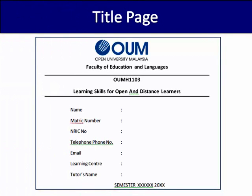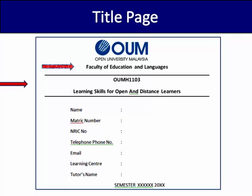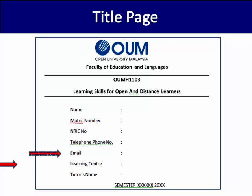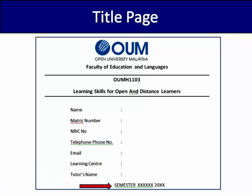A good assignment should include a title page. The title page should have the OEM's name, your faculty's name, the course code and title, your name, your student ID number, your IC number, your phone number, your email address, your tutor's name, your learning center's name, and the semester in which the course was registered.